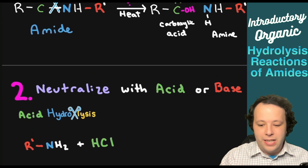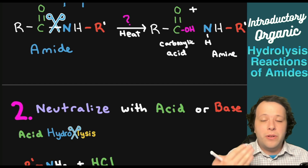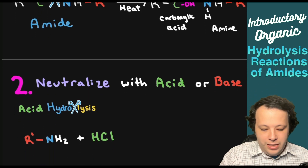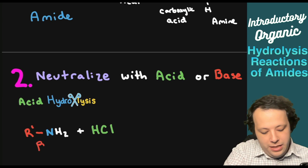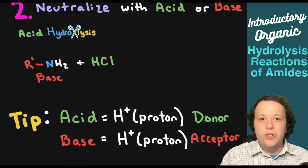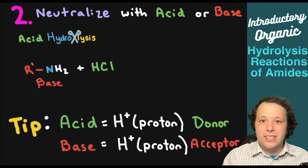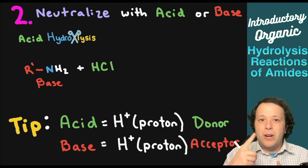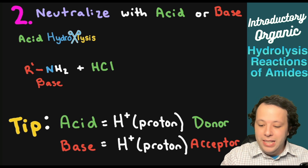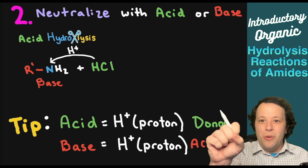Now let's look at the neutralization step and how we can neutralize these two components. If we have a carboxylic acid or an amine, we can neutralize them. The carboxylic acid is the acid and the amine is the base. The amine is our organic base, and this is what we're going to be neutralizing. The big tip here: remember acids are proton donors and bases are proton acceptors. Here we have hydrochloric acid reacting with an amine.